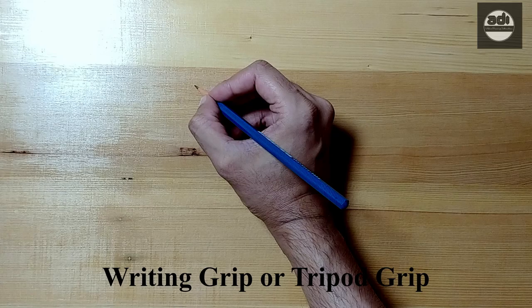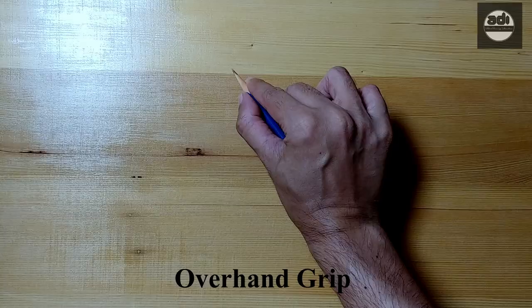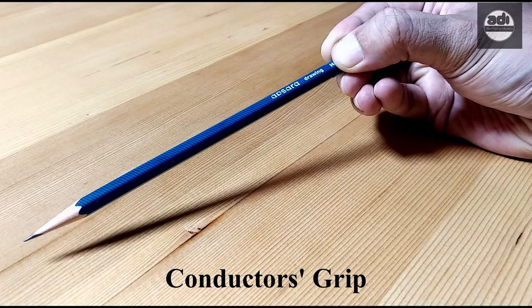There are different grips or ways to hold a pencil. There is the writing grip or the tripod grip, the overhand grip, the candle or the underhand grip, and the conductor grip.